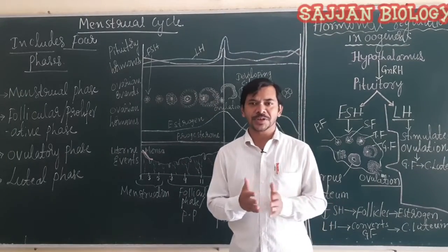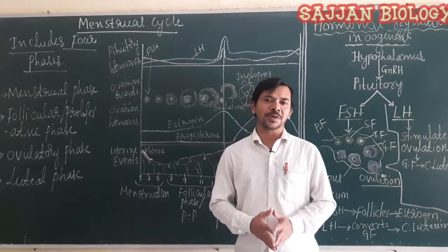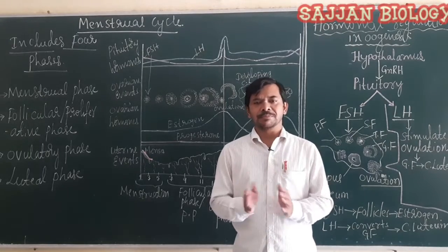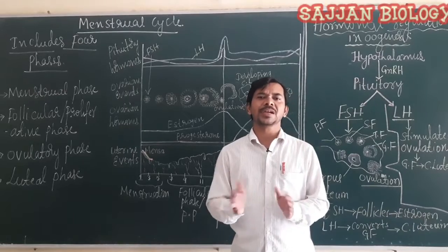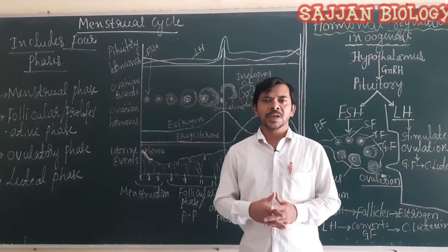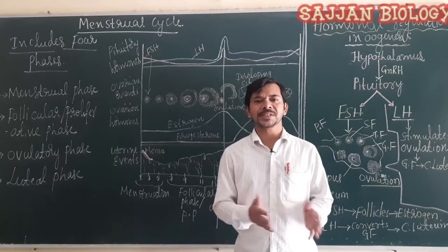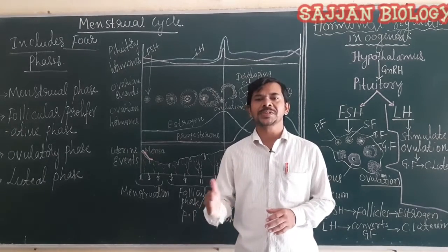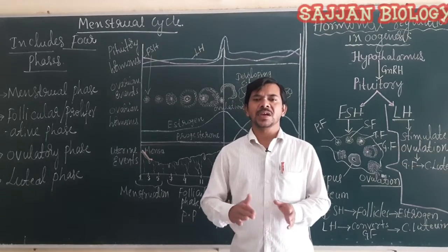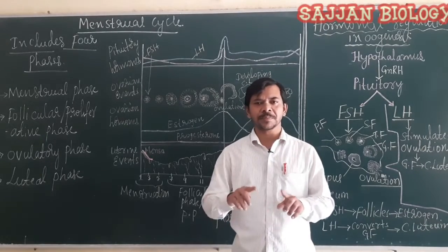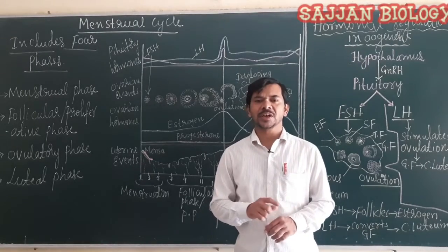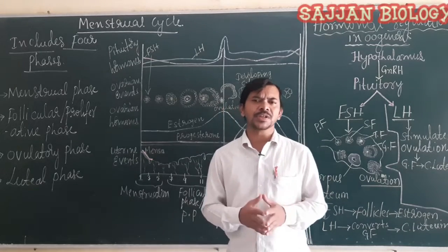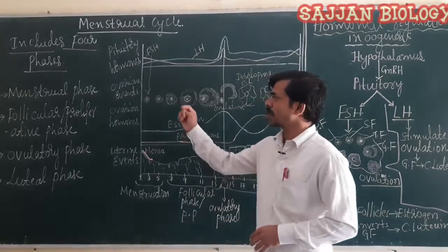Now we are going to discuss the menstrual cycle. The menstrual cycle commonly occurs in female primates like apes, monkeys, and human beings, and on an average lasts 28 days. The occurrence of the first menstruation or menstrual cycle is called menarche, and the cessation of the menstrual cycle is called menopause, which occurs at the age of 45 to 50 years.